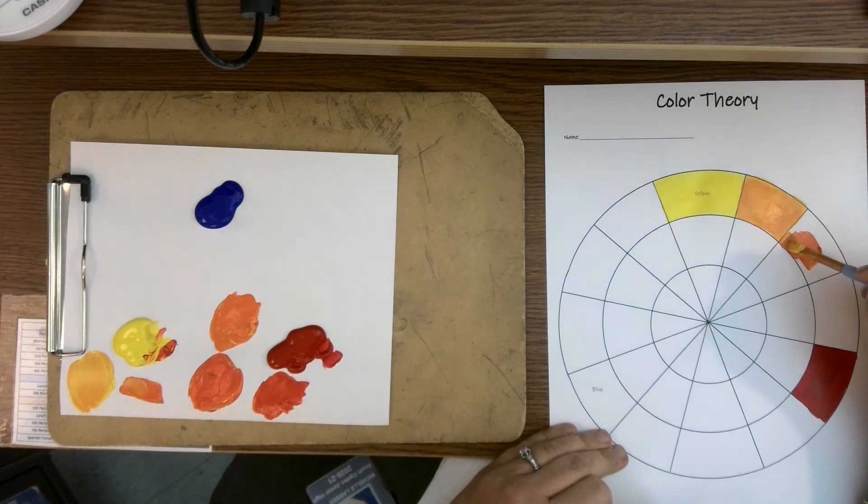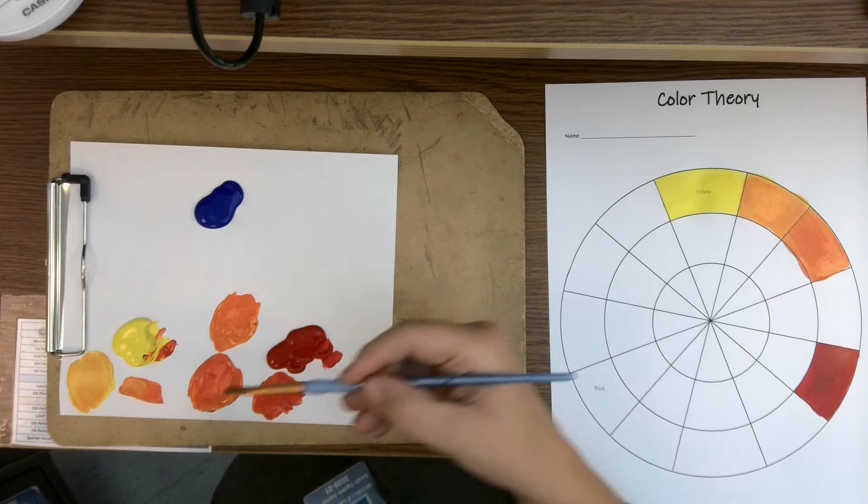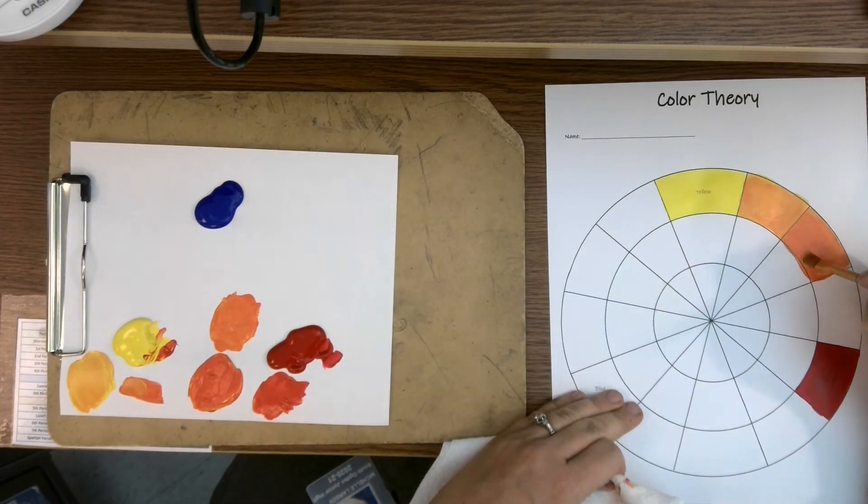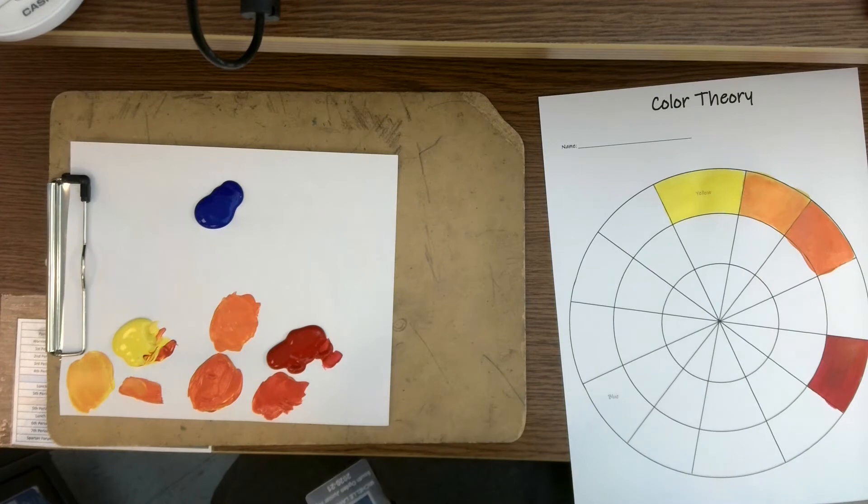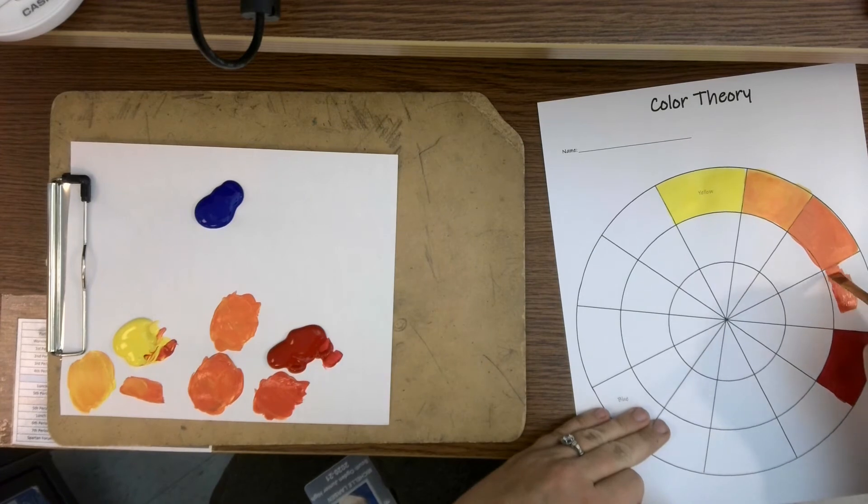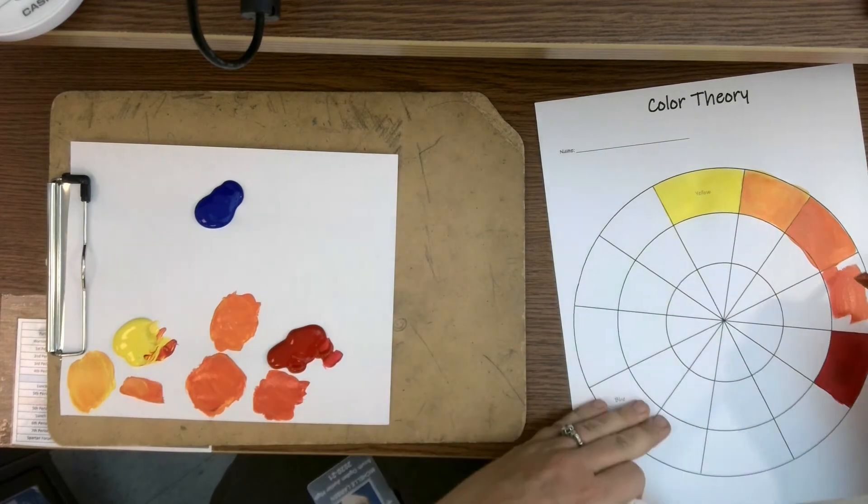Now I'm going for my more orange-orange. If your brush kind of gets globbed up with paint because we used it for mixing, some artists they always only ever mix their colors with a palette knife. They never mix with their brush. I do both, and I'm mixing small amounts of paint, I will mix it with my brush. But if your brush gets filled up with paint, make sure to squeeze that.